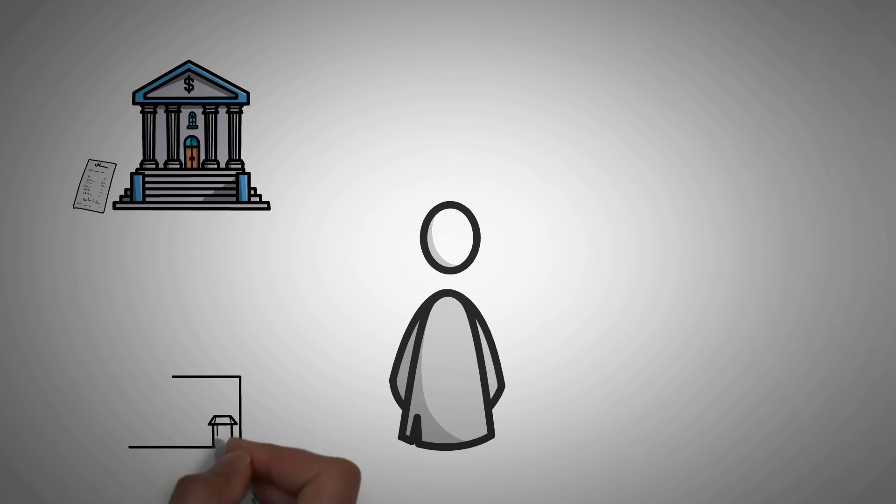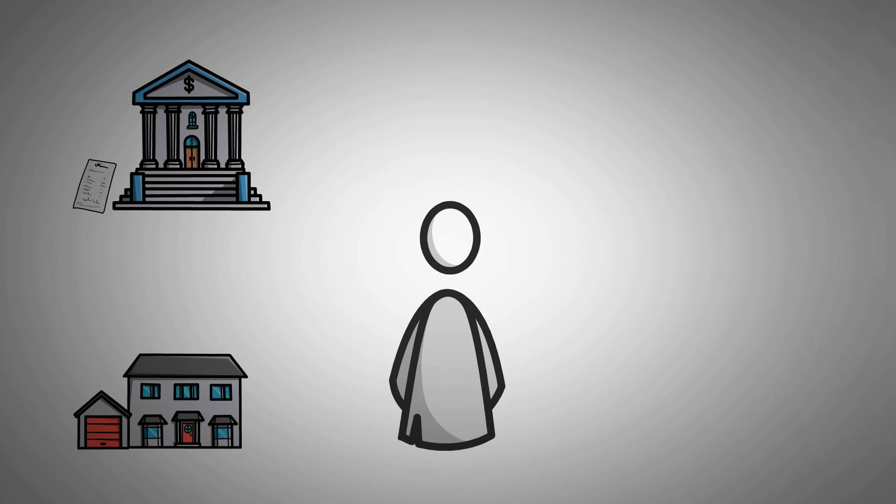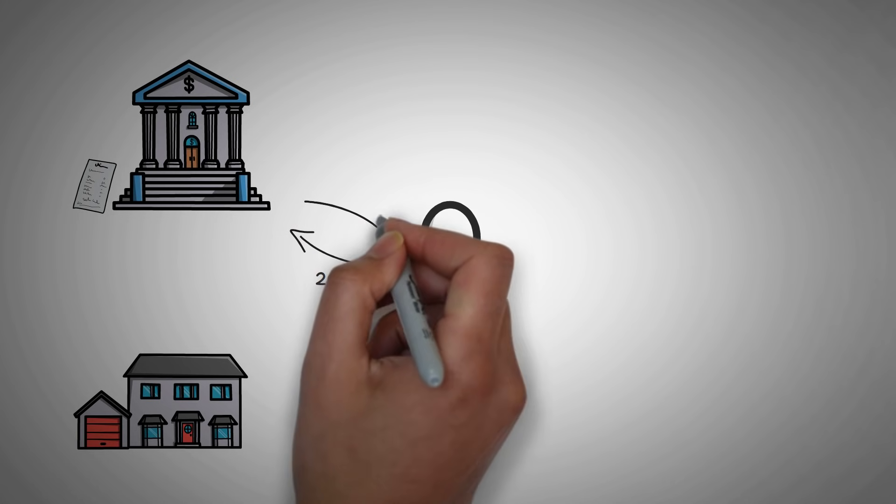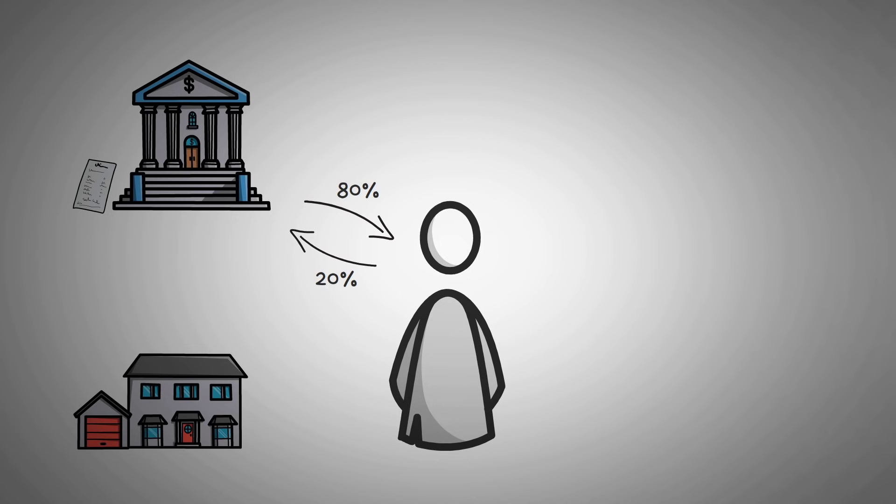Or what about if you're getting ready to buy your first house? Well, for most people, you definitely need a mortgage. You put up a down payment of 20%, so that way you can borrow the other 80% and then make payments on it.